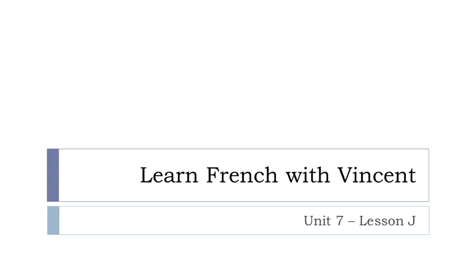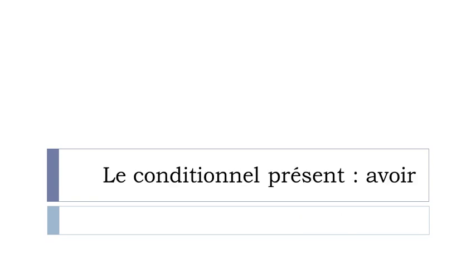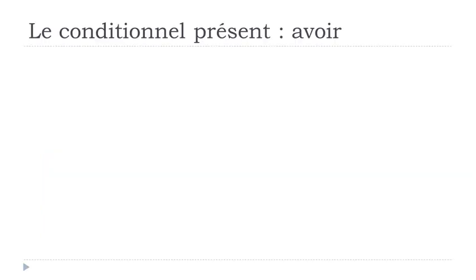Bonjour à tous and welcome to Learn French with Vincent. This is Unité 7, Leçon J. So in the previous lesson, we saw the conditionnel passé form of être, to be. And in this lesson, we'll focus on le conditionnel présent form of avoir, to have. So let's see now how it goes.